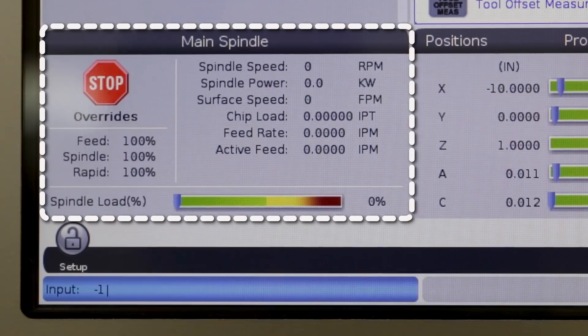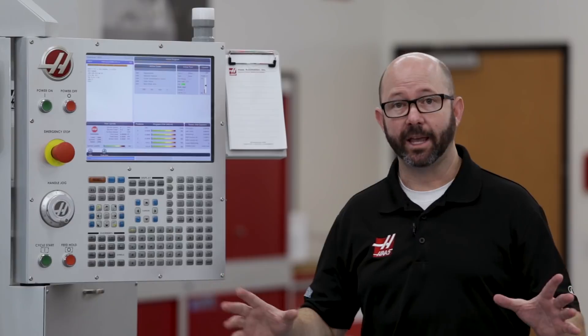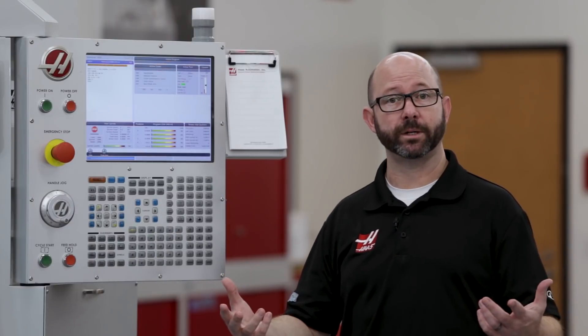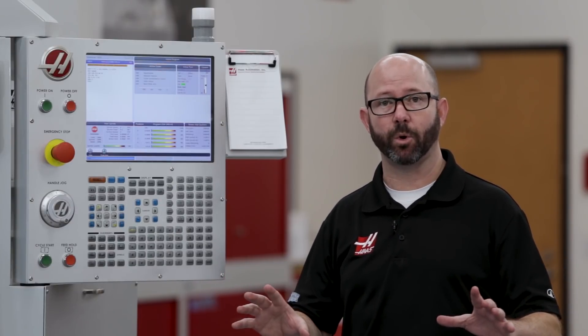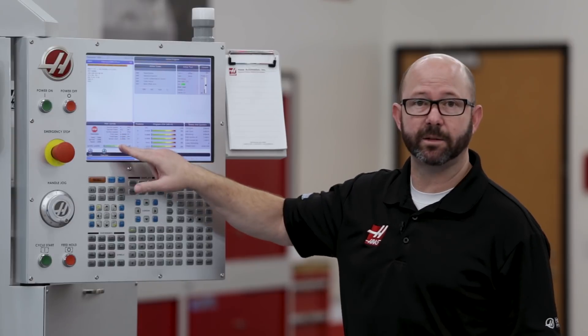This small display pane in the lower left-hand corner of our screen has some really important information. In fact, the information is so important that no matter what display mode you are in, this screen is still going to be visible.